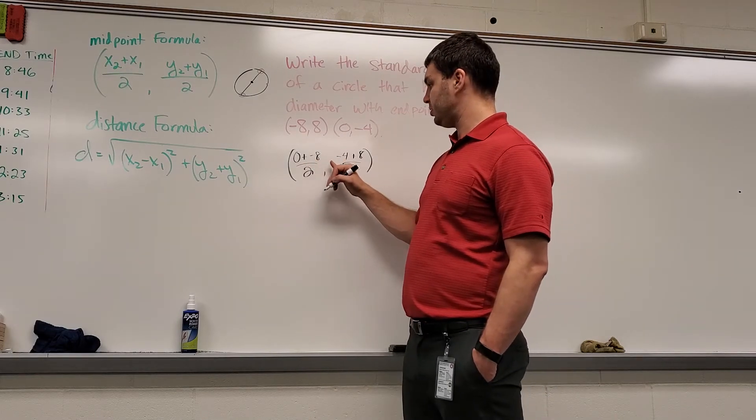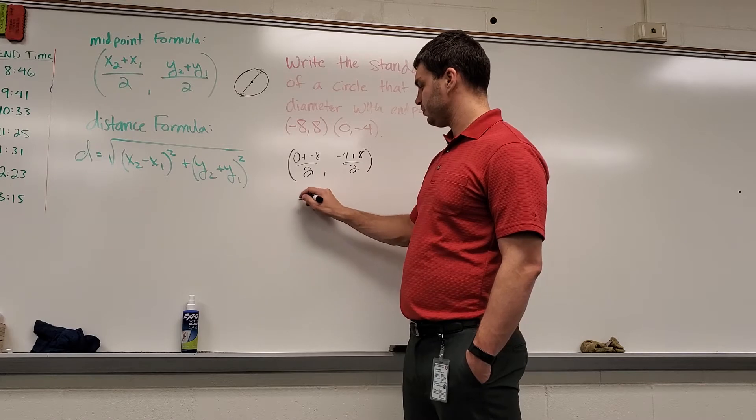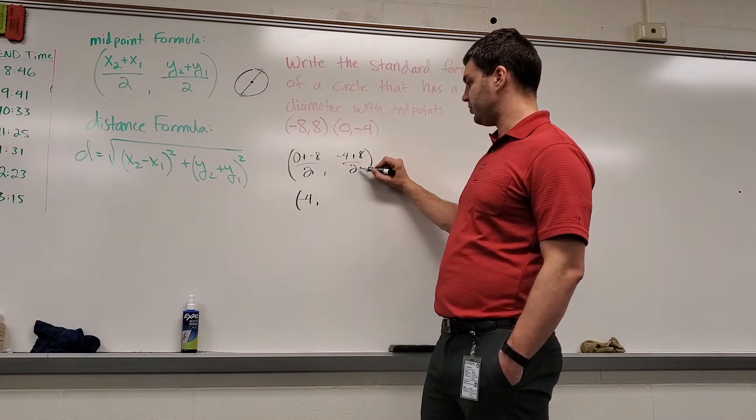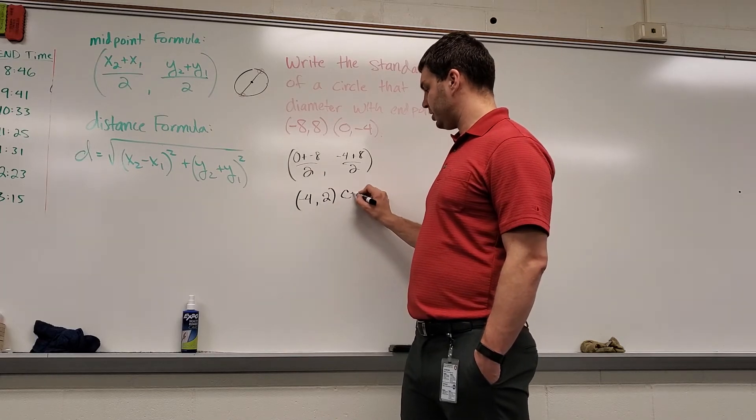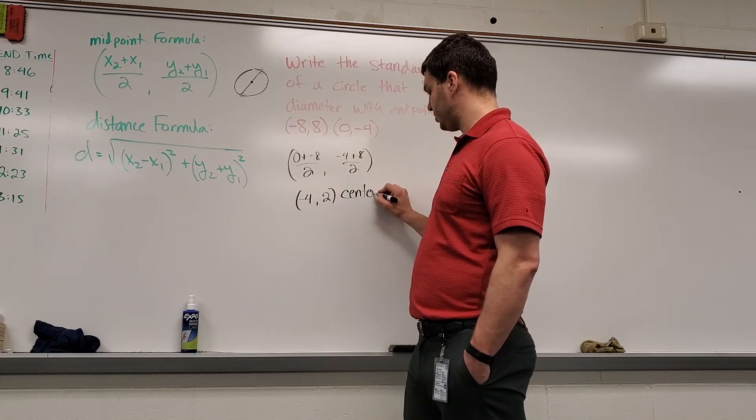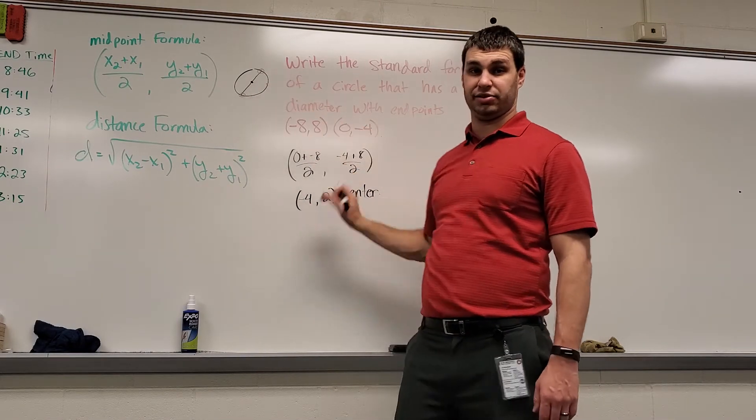This is negative 8 divided by 2 is negative 4. And then over here, this is 4 divided by 2 is 2. I'm just going to label this as center. The midpoint of those two endpoints of the diameter is the center of the circle.